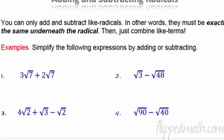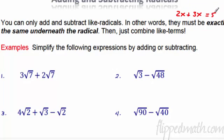Let's go back to something we all know how to do — combining like terms. Like 2x plus 3x: you just add the numbers in front, the coefficients. That's 5x. What about 2x plus 3y? They're different, we can't add them together, so that's just 2x plus 3y.